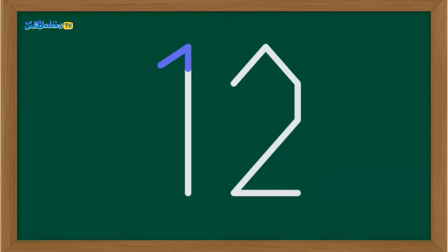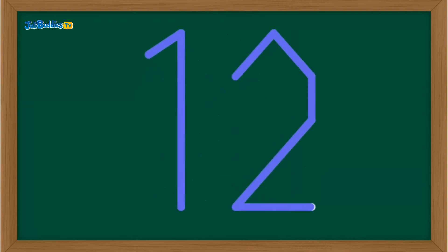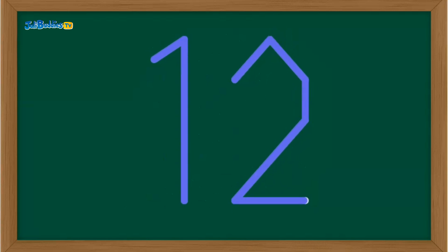Number twelve. A straight line for the one, and then a quick curve, slant, and dash for the two. You're getting so good! Twelve.